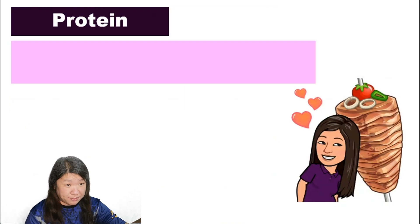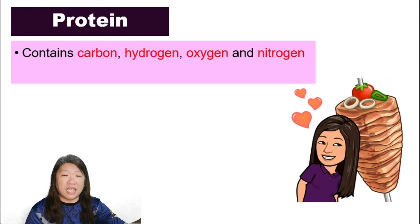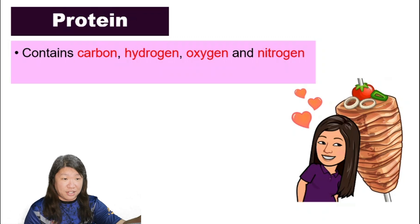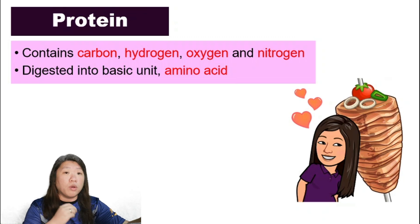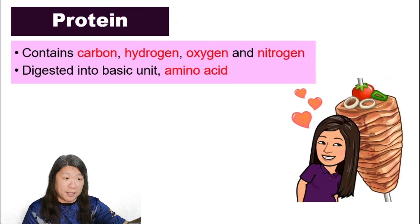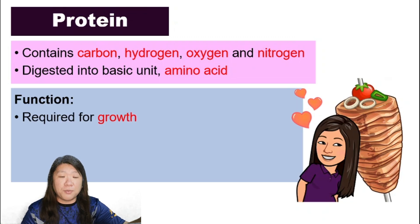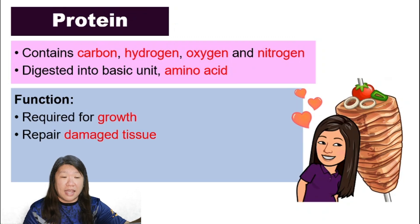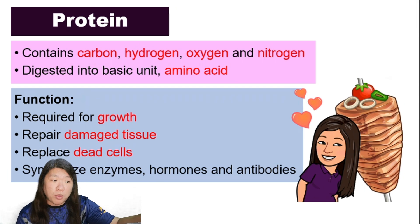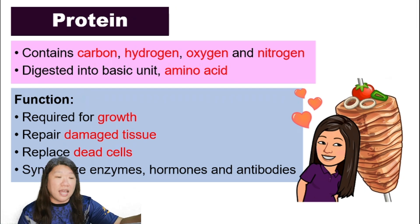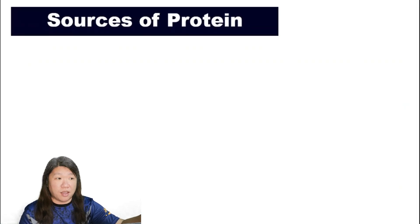How about protein? Protein contains carbon, hydrogen, oxygen, and nitrogen. It is digested into the basic unit called amino acid. We will learn more about amino acid in a topic yet to come in this chapter. The function of protein: it is required for growth, it repairs damaged tissue, replaces dead cells, and synthesizes enzymes, hormones, and antibodies.